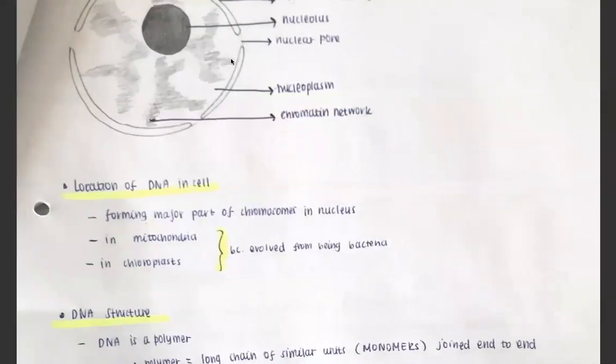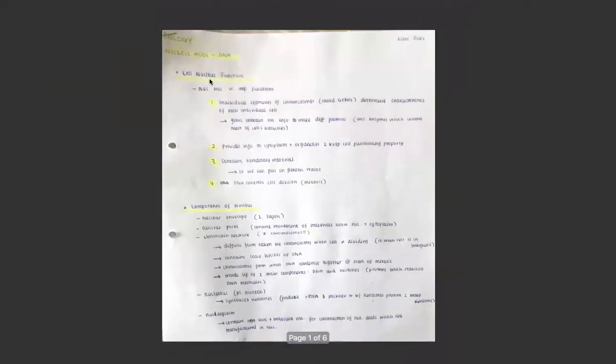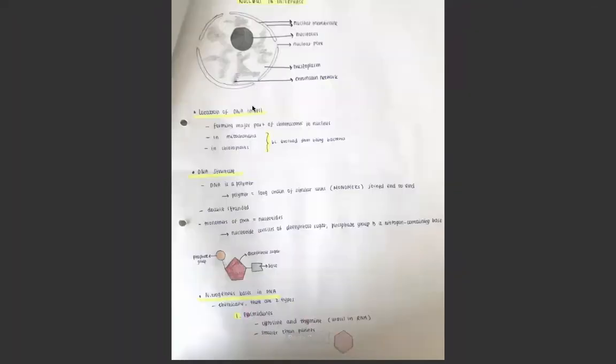The last thing in the nucleus is the nucleoplasm, which contains ions and molecules that are needed to make nucleic acids, RNA and DNA, which are made inside the nucleus. As you can see here, here's a drawing of the nucleus. We can see the nuclear membrane with the nuclear pores around it, the nucleoplasm and the chromatin network, which is the diffuse form of the chromatins. And here's one nucleolus.